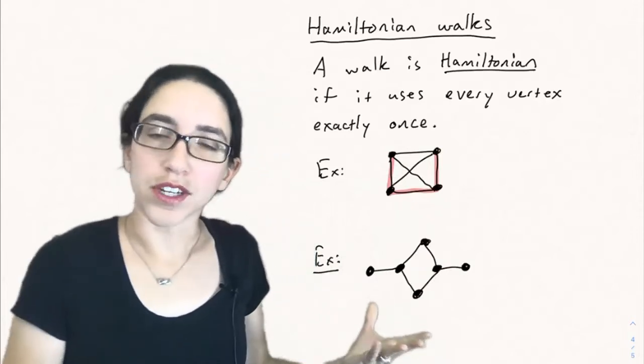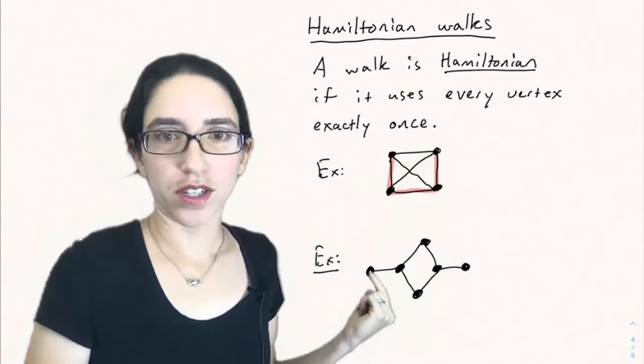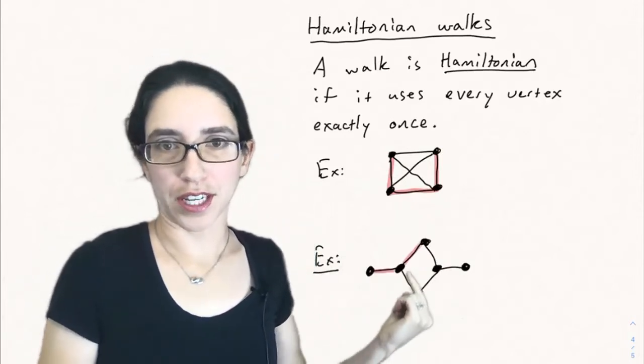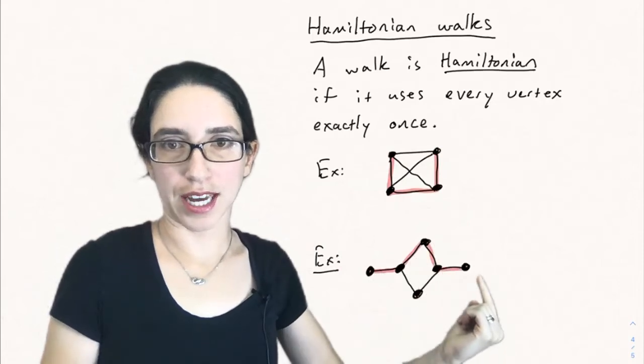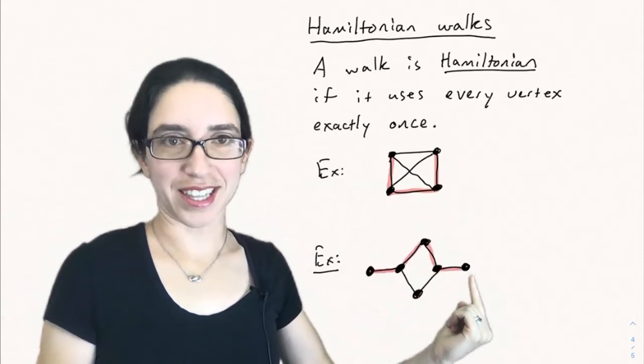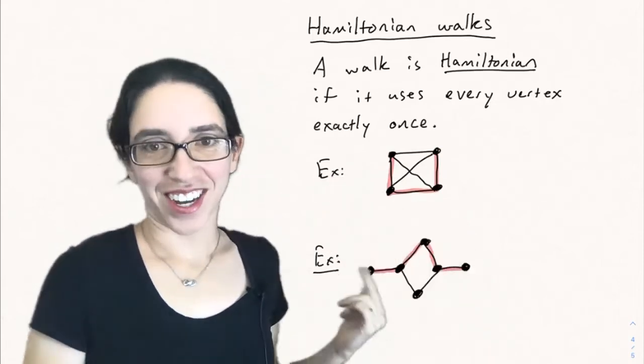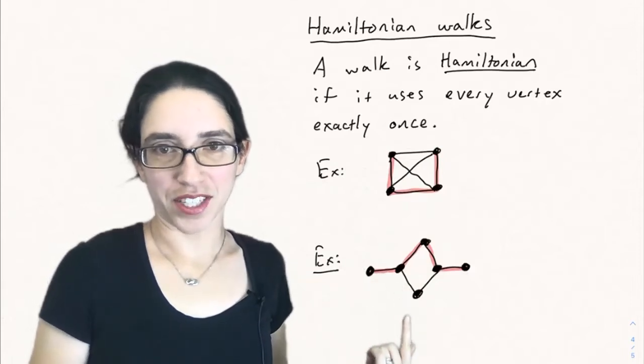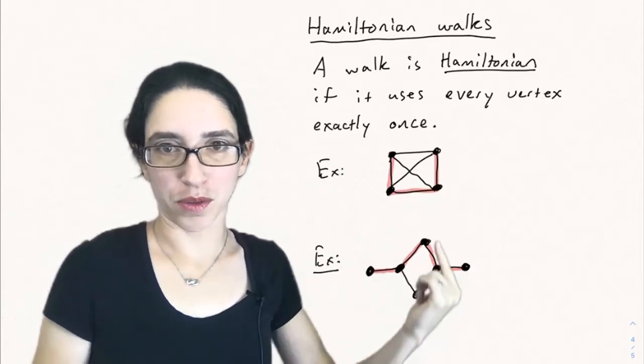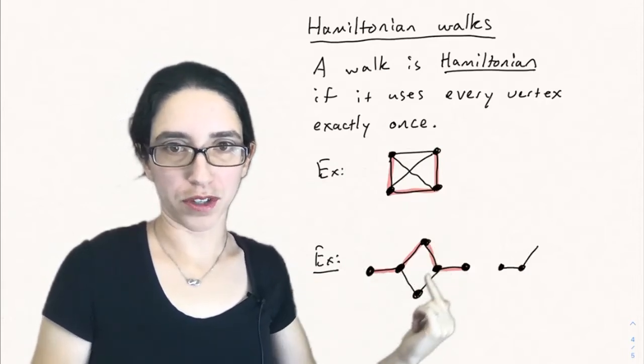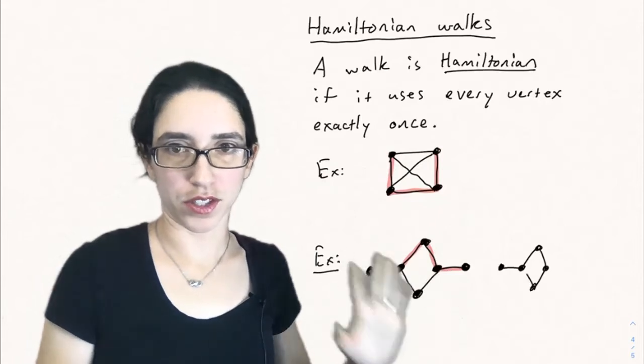But here's an example of a graph that doesn't have a Hamiltonian walk. So if you try to start here and cover every vertex exactly once, oh, we got stuck at the end. Wait, let's try again. Maybe we can get this vertex down here by going around a different way, or maybe we can turn downwards at this step. So let's draw it again.